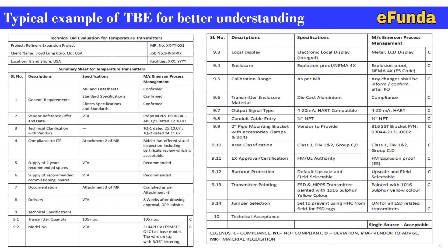Now we'll briefly cover the general requirement confirmed by the vendor based on the specifications. One can completely review this TBE by understanding and studying the table, which covers technical specifications for the transmitter: transmitter quantity, model number, local display, enclosure, calibration range, transmitter type, enclosure material, output signal type, cable conduit entry, 2-inch pipe mounting bracket with required accessories, area classification, ATEX approval or certification, burnout protection for the transmitter, transmitter painting, jumper selection, and the final technical acceptance of the vendor.